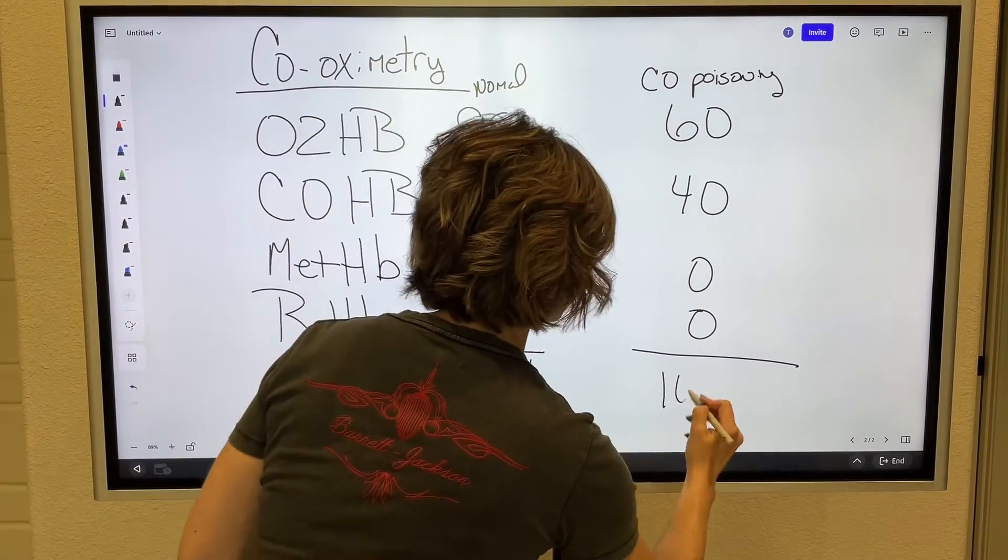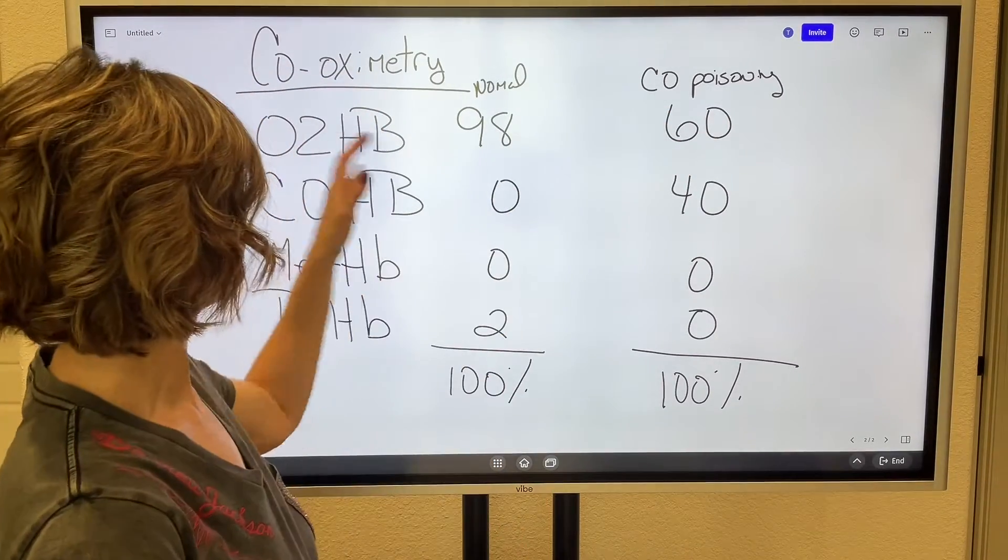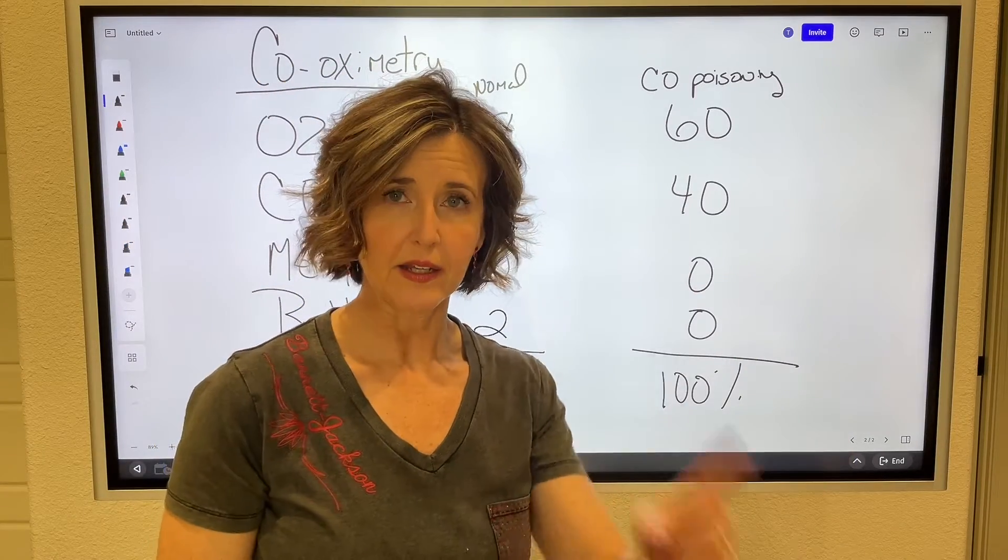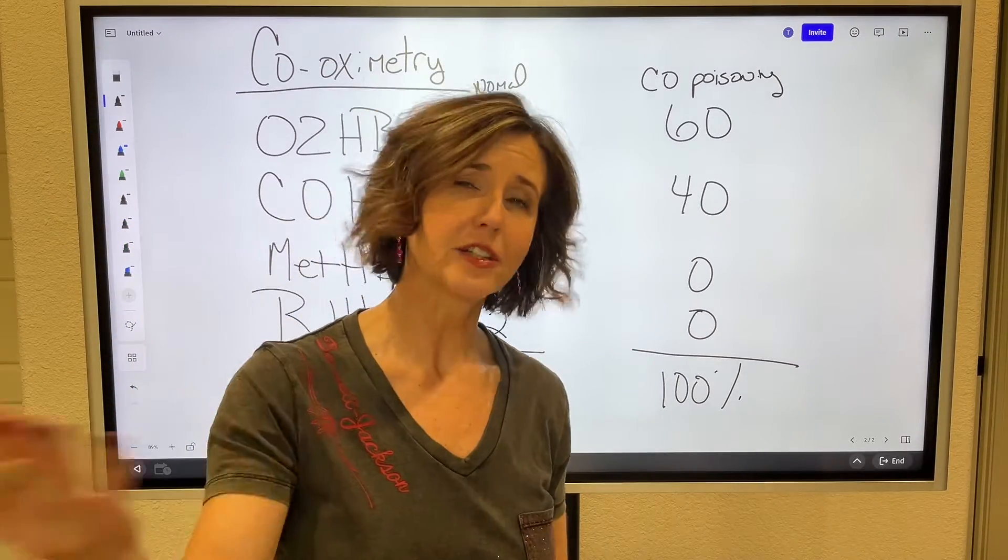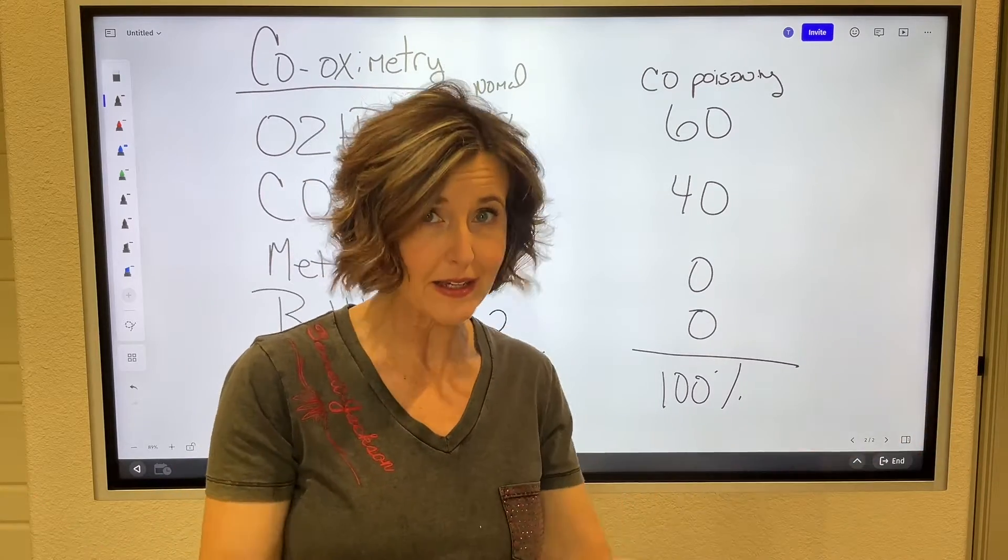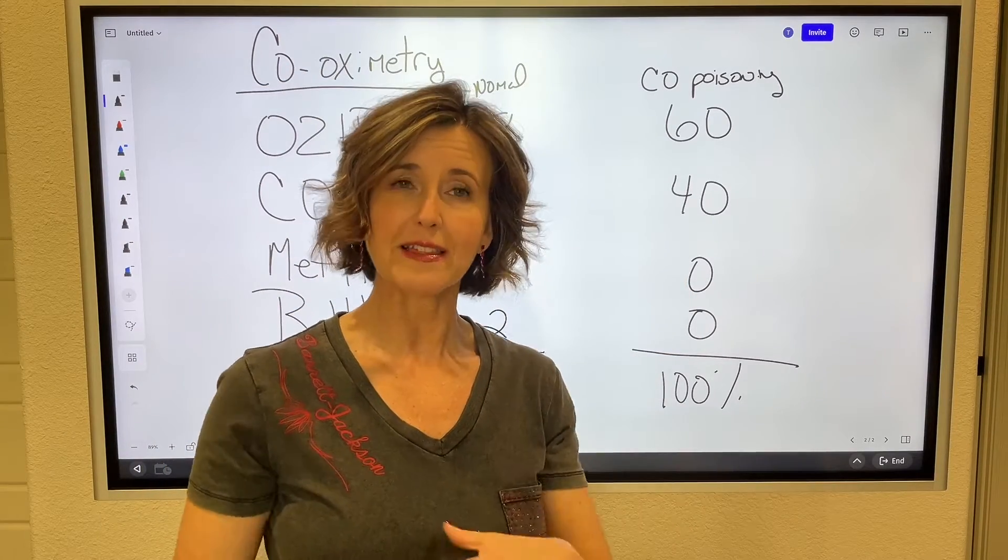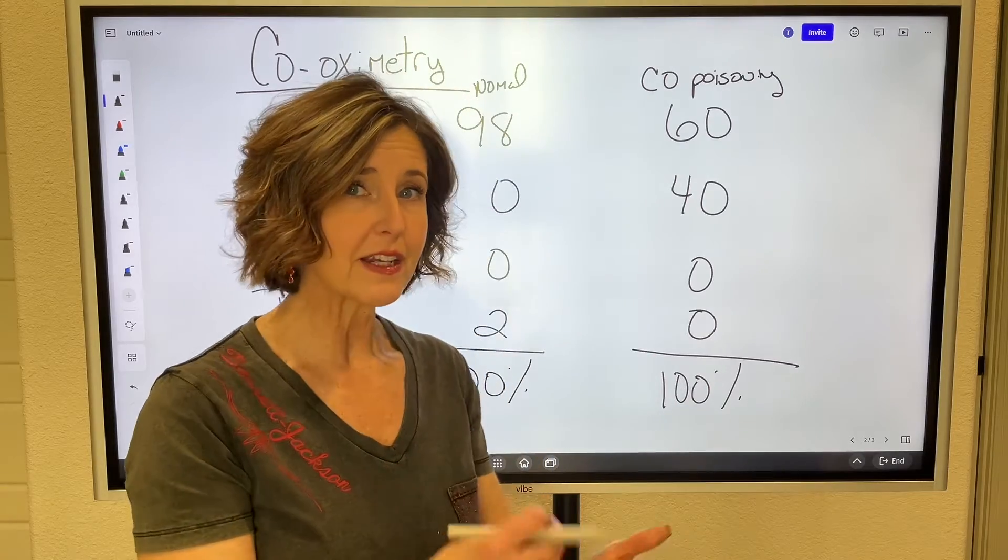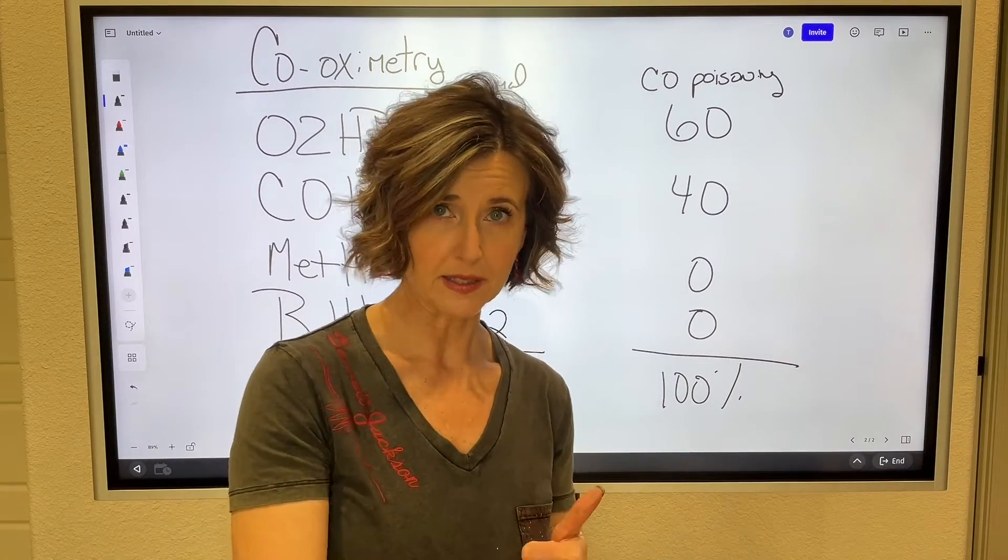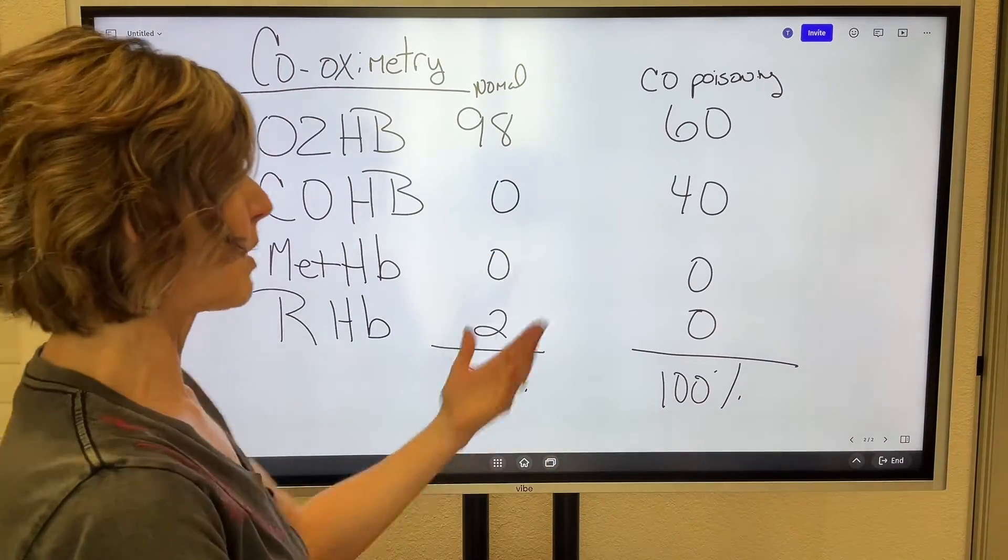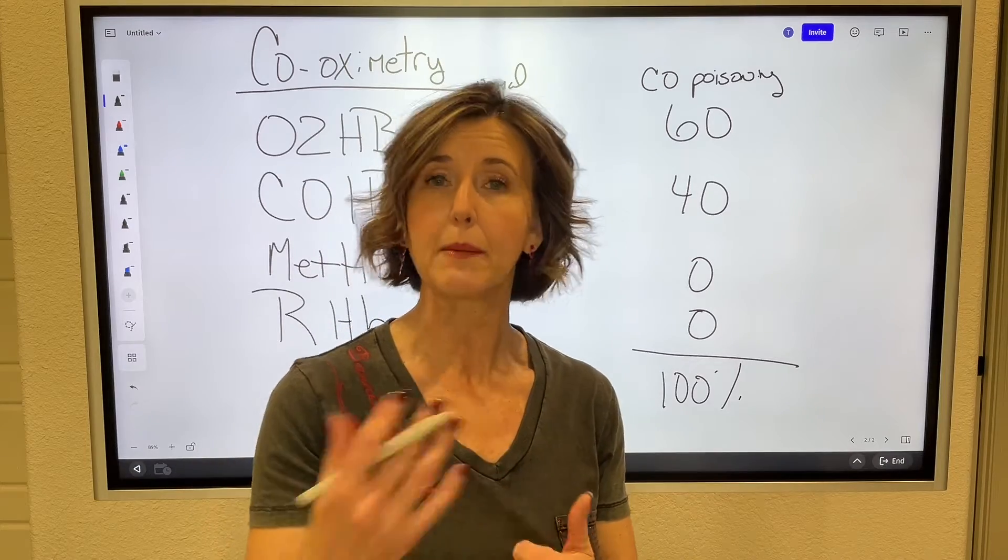I'm going to leave normal here, and now we're going to compare it to a person with carbon monoxide poisoning. I'm going to make it extreme. So this might be the co-oximeter of a patient with carbon monoxide poisoning. You see when we add these up, it's still 100%, but what we've got going on now is 60% of it is oxygen, and 40% of it is carbon monoxide. Here's the problem. If anything other than oxygen is attached to the hemoglobin, the tissues will get hypoxic. That's the big thing.